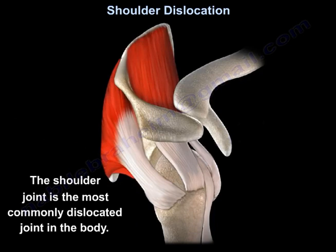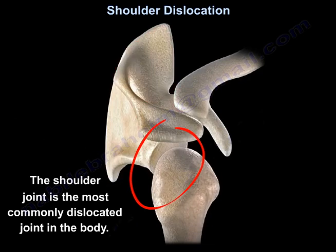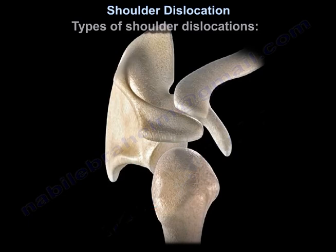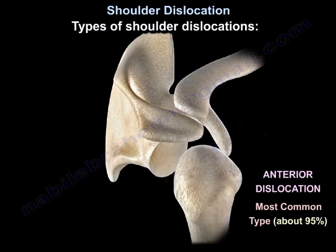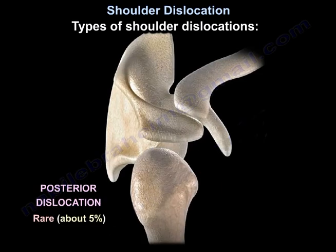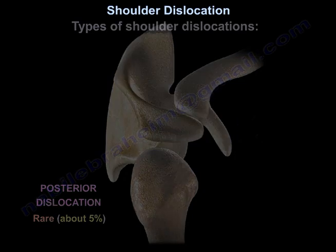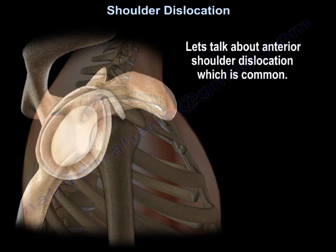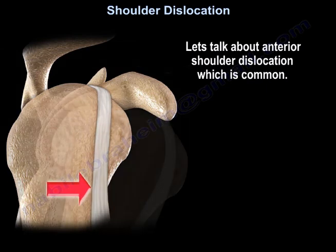The shoulder joint is the most commonly dislocated joint in the body. There are two types of shoulder dislocation: anterior shoulder dislocation, which is the most common type at about 95%, and posterior shoulder dislocation, which is rare at about 5%.